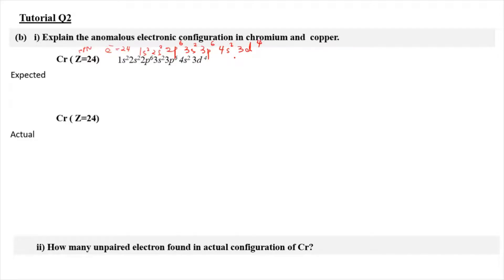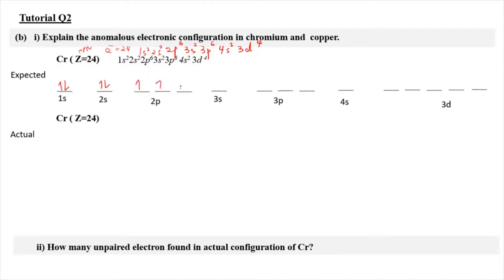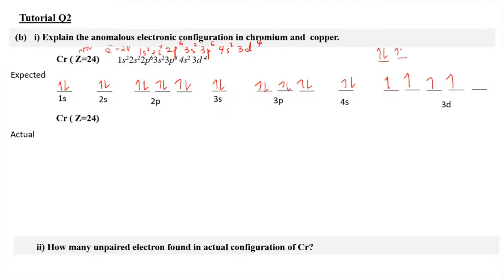We write the orbital diagram and fill in the electrons inside the orbitals. We fill 1s, 2s, 2p, 3s, 3p up to 20 electrons, and then for 3d4 we need to fill singly first — 1, 2, 3, 4 — before any pairing, following Hund's rule. So we cannot pair them immediately. This is what we predict or expect.